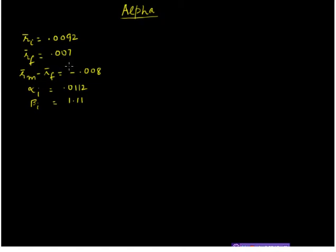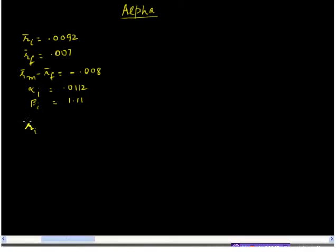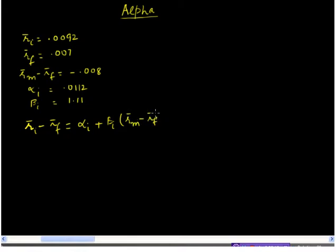Let us begin by first looking at alpha from the standpoint of the single index model. The single index model says that the average excess return on a security can be written as alpha of the security plus beta of the security times the average excess return on the market.